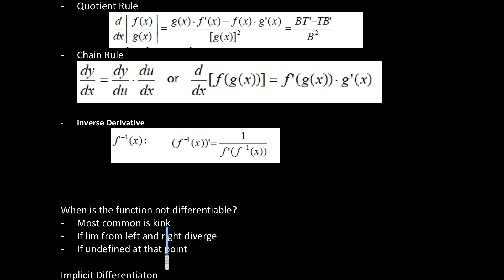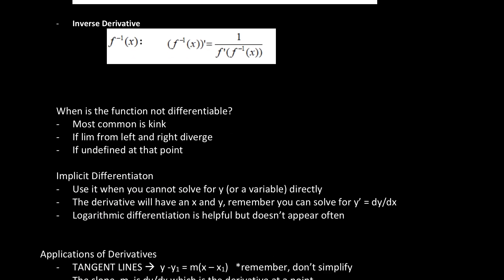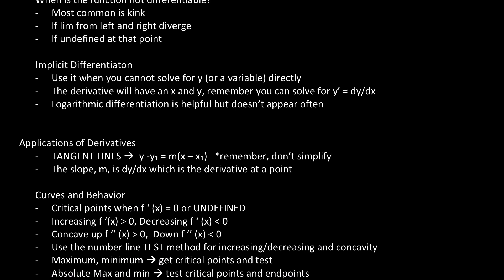Make sure you know when it's not differentiable. The most common one is a kink. So when we see a kink, we'll know it's not differentiable there. If the limit from the left and the right diverge, it is not differentiable. And if the limit is undefined at that point. The next topic we want to talk about is implicit differentiation. Make sure you understand that if something cannot be solved for y directly, then you're going to have to separate it out by taking the derivative of x and y each. So every time you take a derivative of y, you're going to write dy/dx or y prime. And every time you take a derivative of x, that will just be dx over dx, which is 1. And then you solve for dy/dx. Logarithmic differentiation doesn't appear often on the AB test, so we covered it, but it really probably won't be into play.